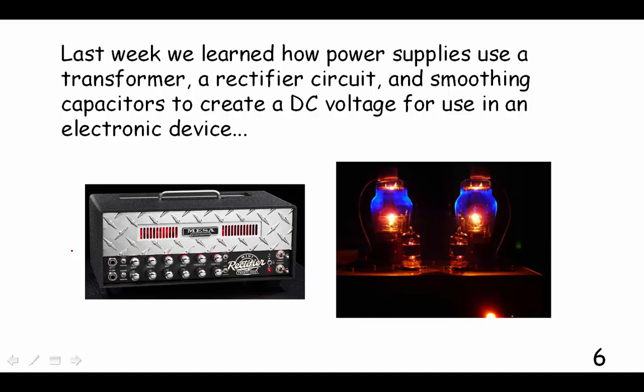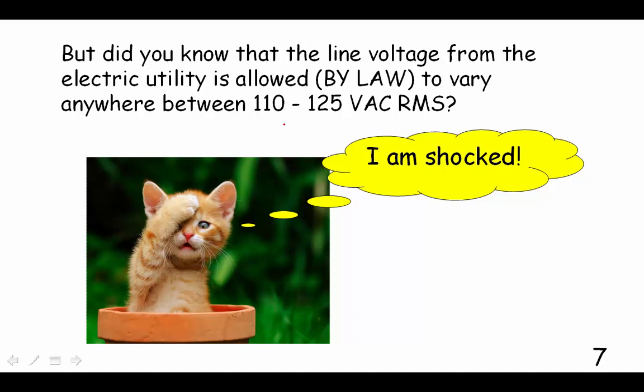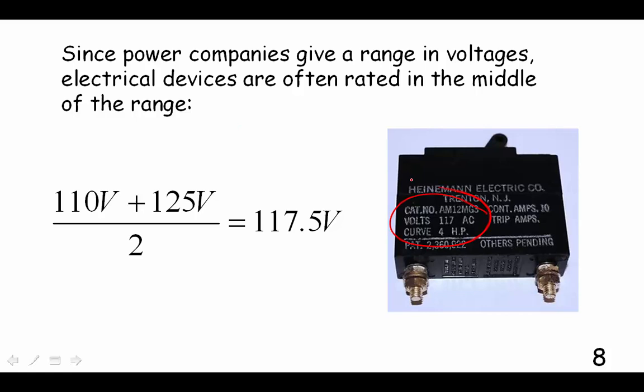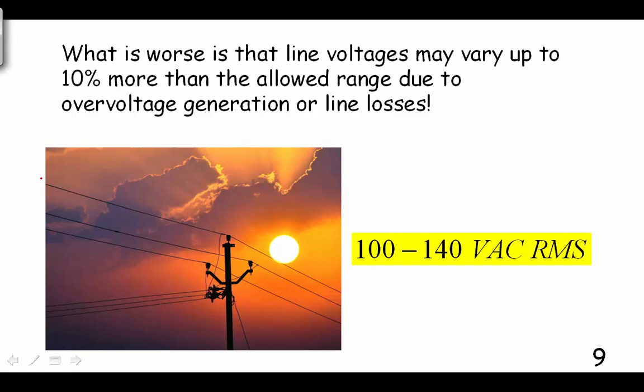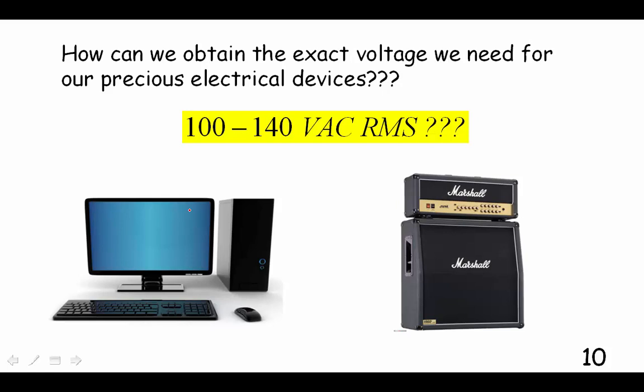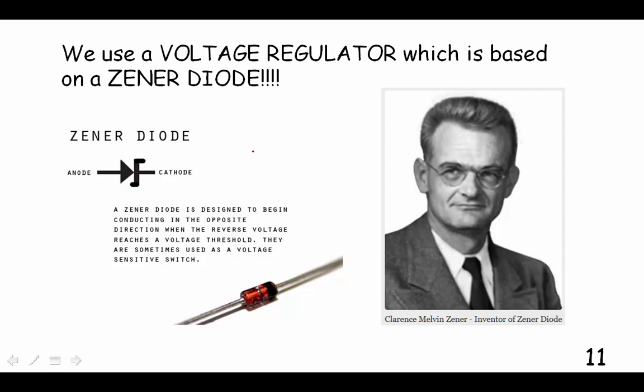Last week we learned how power supplies use a transformer, a rectifier circuit, and a smoothing capacitor to create a DC voltage for use in electronic devices. But did you know that line voltages from the electric utility company are allowed to vary between 110 and 125 volts AC RMS? That's why we often see things rated at 117 volts, because it's directly between those two voltages. What's worse is line voltages may vary up to 10% more than the allowable range due to over-voltage generation and line losses. So how can we obtain the exact voltages we need for our precious electronic devices?